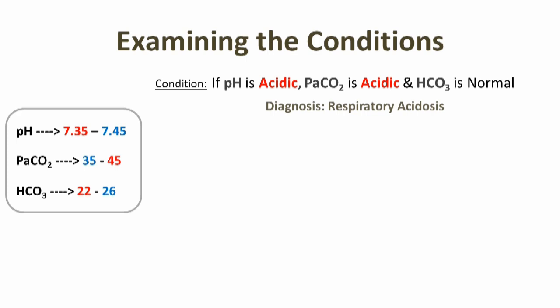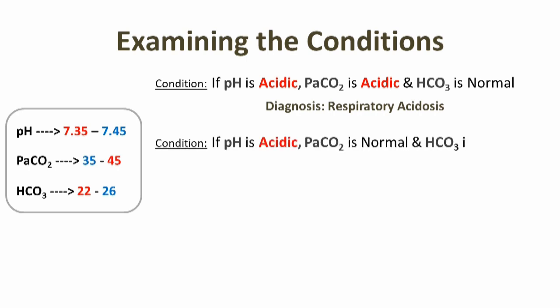Condition number two: if pH is acidic, PaCO2 is normal, and HCO3 is acidic, then it indicates metabolic acidosis. Because HCO3 is related to the kidneys, meaning metabolic, and pH is acidic here, therefore metabolic acidosis.